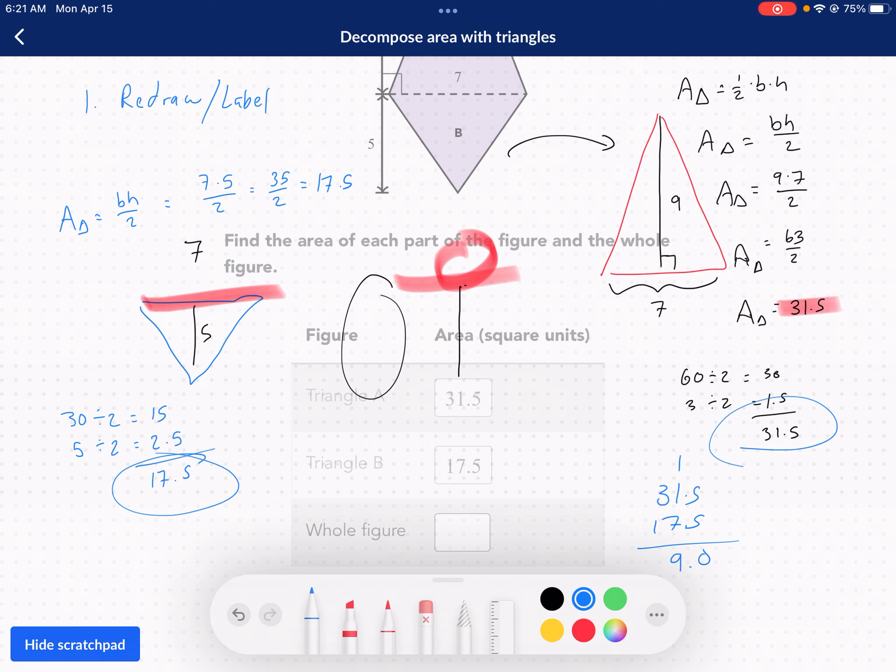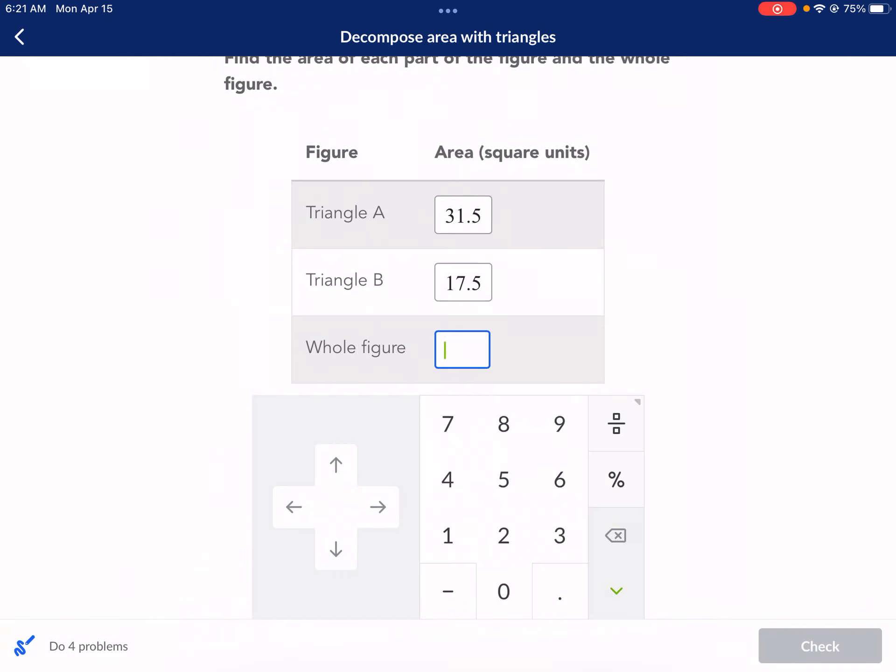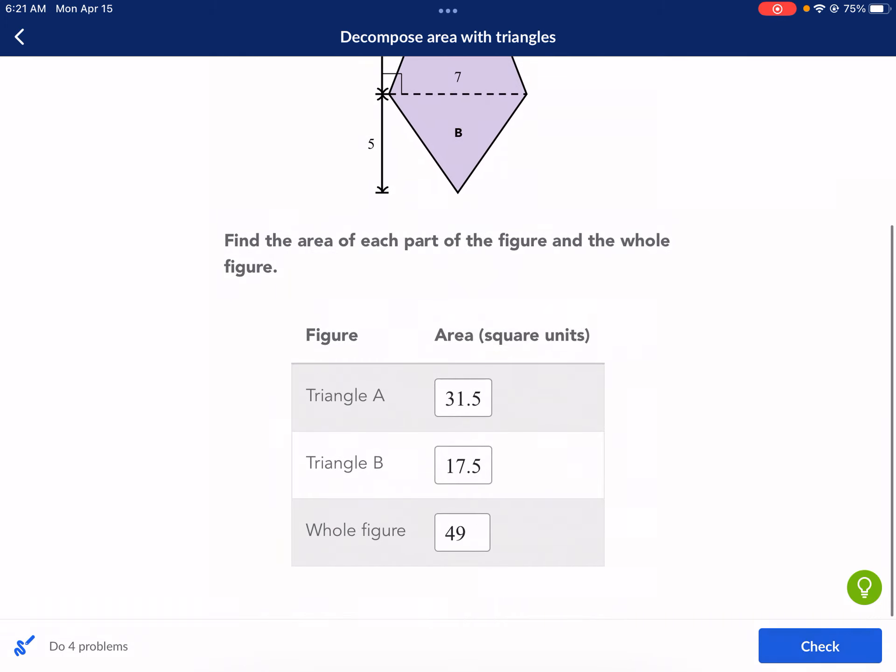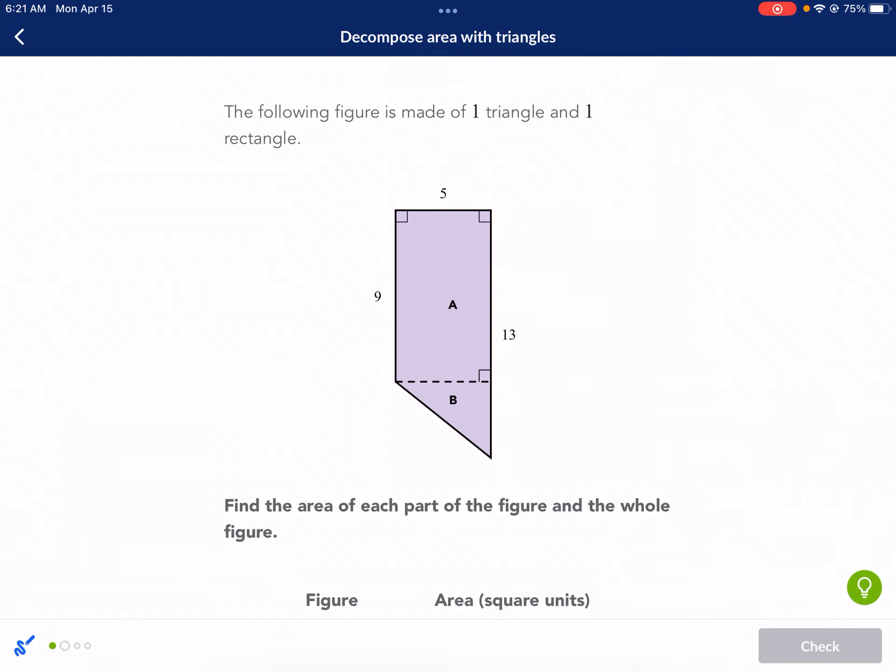So, I have a five plus five is ten. Carry the one. I do seven plus one plus one. That's nine. And then three plus one is four. So, 49 units squared is my, whoops, supposed to be a four. 49. And I should be able to check it and we're good to go.